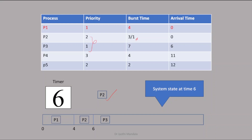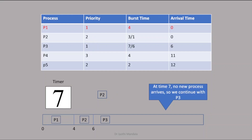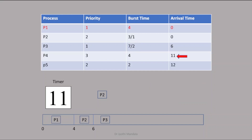P3 requires 7 seconds, out of which 1 second is executed at the 6th second. P2 has not completed its execution — it still requires 1 second — but because of the priority constraint we transferred the CPU to P3. At the 7th second, no new process has arrived. We continue executing P3. At the 8th second, no process is arriving. At the 11th second, a new process P4 arrives and is added to the ready queue.